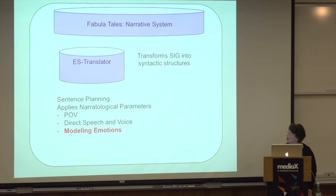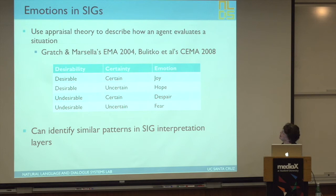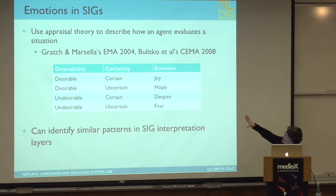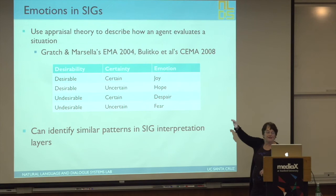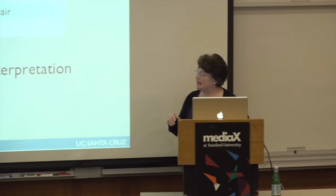We have this very new thing — which we haven't quite fully developed and haven't really experimented with yet — which is modeling emotions. The idea is that we can use the underlying representation of the story intention graph to produce different emotional responses. We know which actions are desirable and which are undesirable from the graph, and we can tell whether an event is certain or uncertain. Using appraisal theory, this directly gives us the different emotions the characters should have.